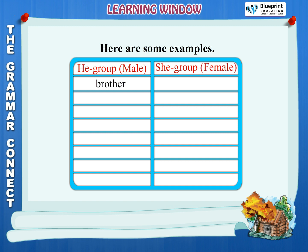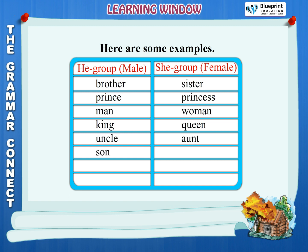Brother, sister. Prince, princess. Man, woman. King, queen. Uncle, aunt. Son, daughter.